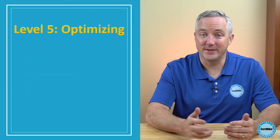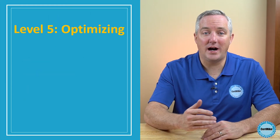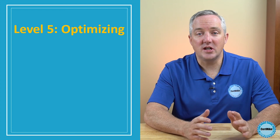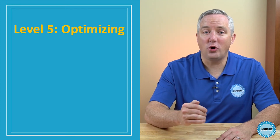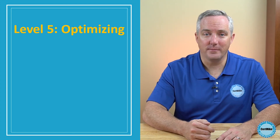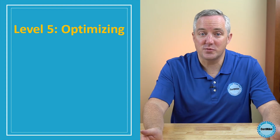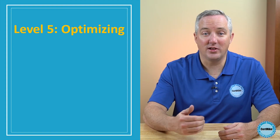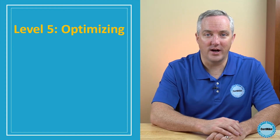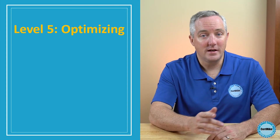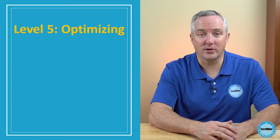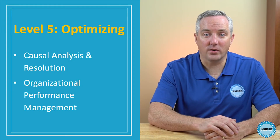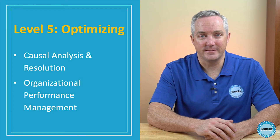Finally, level five organizations are Optimizing. They use continuous process improvement to strive to always get better. Feedback from projects flows back into their development processes, allowing them to improve with each new project. Practices here include causal analysis and resolution, and organizational performance management.